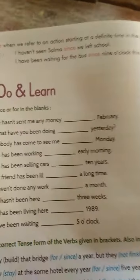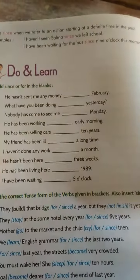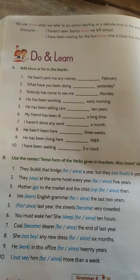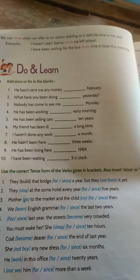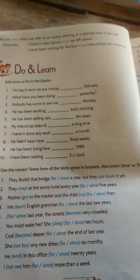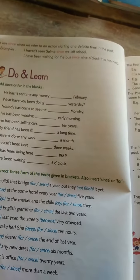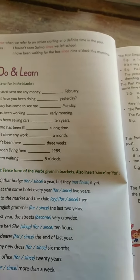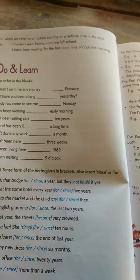Good morning students. Today we are going to do exercise page number 74, under exercise A, do and learn — add 'since' or 'for' in the blanks. Where is 'since' and where is 'for'? You need to know that 'since' is used for a point of time and 'for' is used for a period of time.